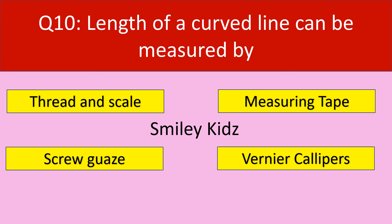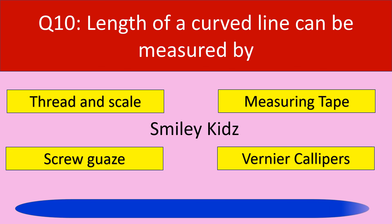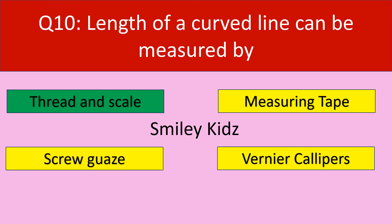The last question. Question number 10. Length of a curved line can be measured by. Your options are thread and scale, measuring tape, screw gauge, vernier calipers. Your time starts now. Time up. The answer is thread and a scale. Length of a curved line can be measured by thread and a scale.